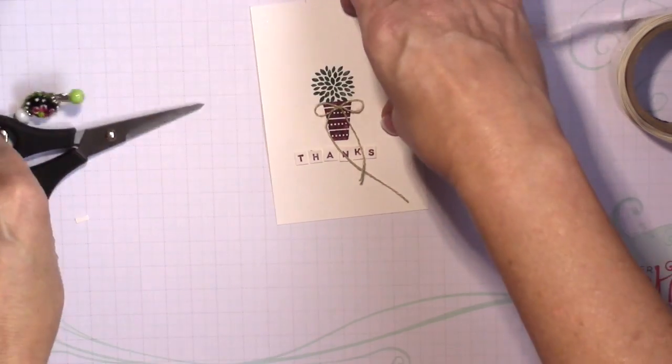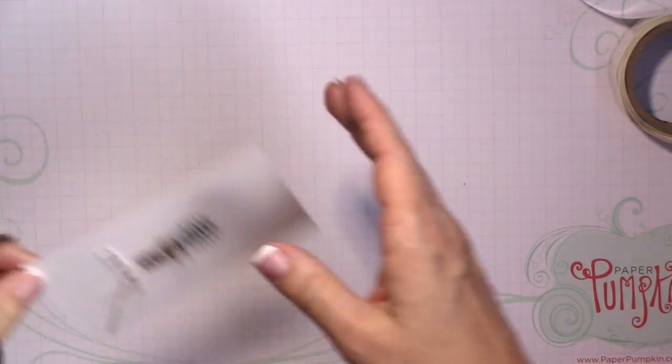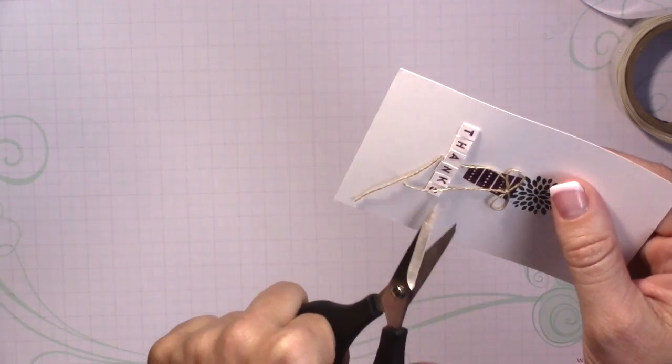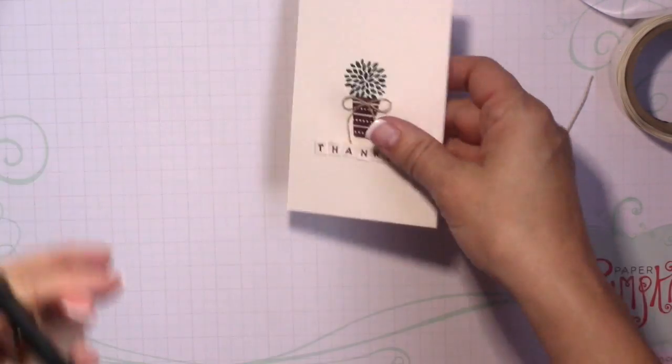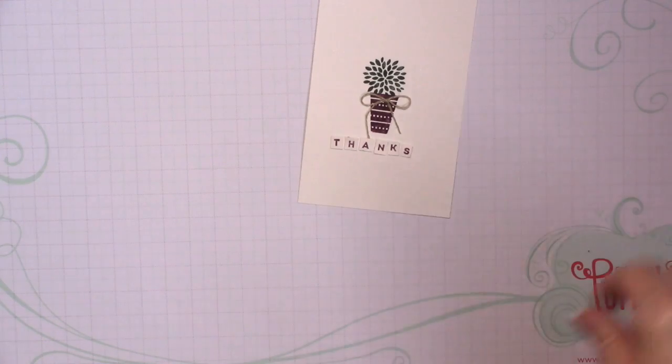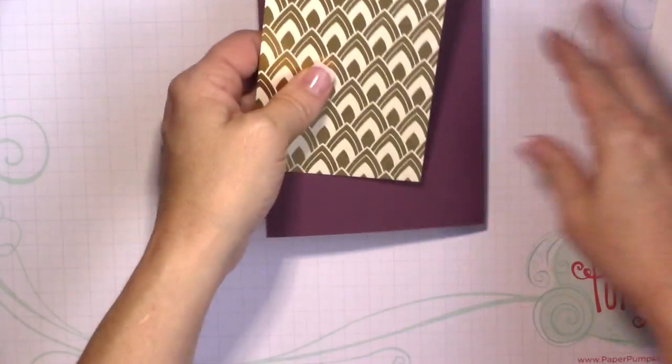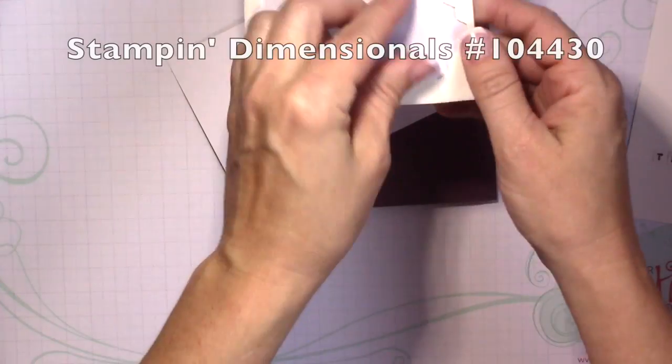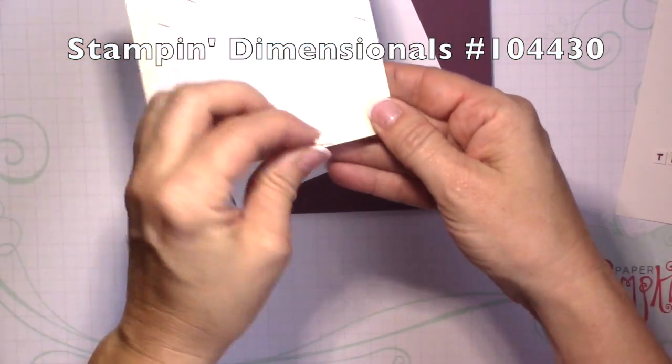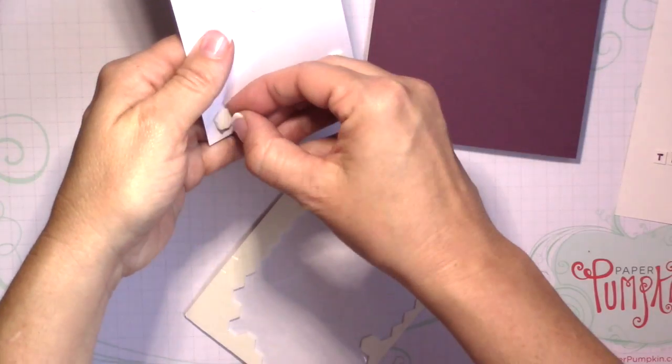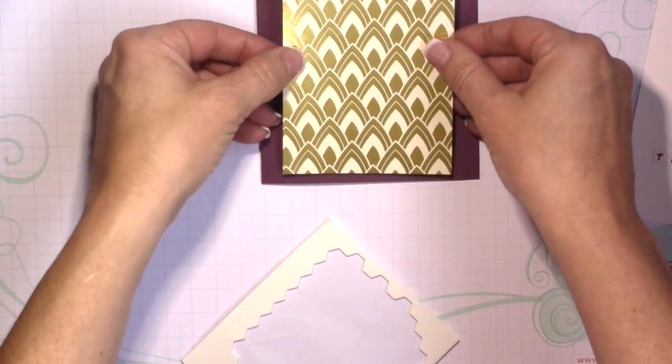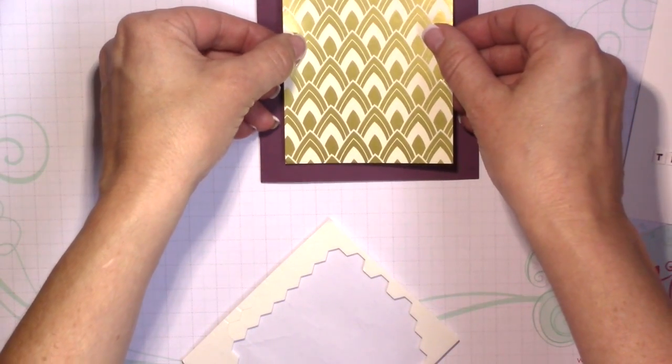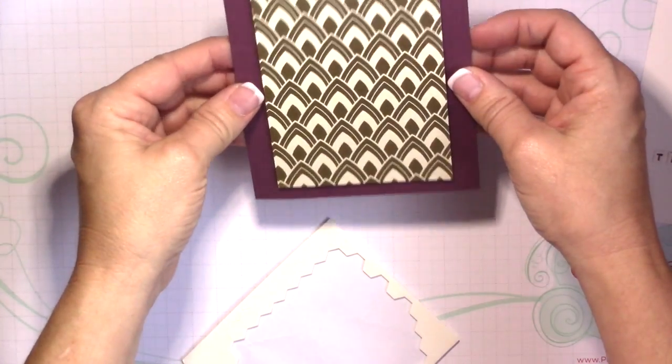And then I'll be adhering the stamped panel onto the designer series paper here in just a second. So I'm going to go ahead and pop this up with Stampin' Dimensionals. I like to put a dimensional on each corner and then one in the center of the panel just to ensure that it's nice and secure and doesn't sag in the middle. So that's just going to go centered on the card base and that gold foil is so pretty in person.